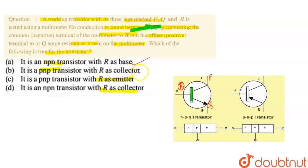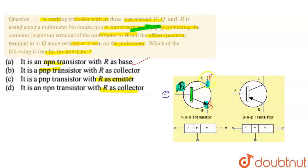तो R as a base confirm हो गया। अब यह कैसे पता करेंगे कि NPN transistor है या PNP transistor है? Negative terminal को R से connect किया और P और Q को positive से connect किया। P और Q में से कुछ resistance मिल रहा है।